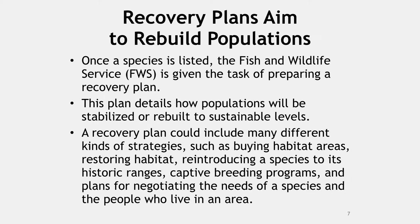For example, the red-cockaded woodpecker is an endangered species that preys on insects in damaged pine forests from North Carolina to Texas. Few suitable forests remain on public lands, so much of the remaining population occurs on privately owned lands that are actively managed for timber production.